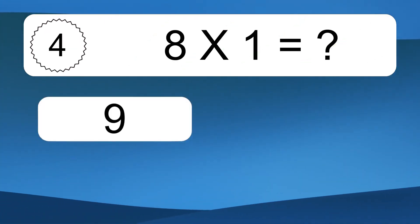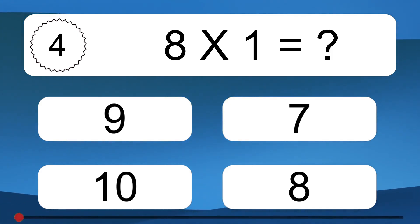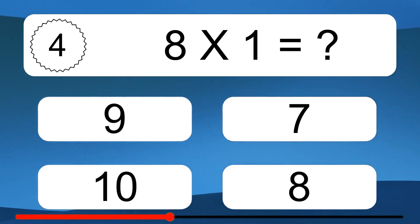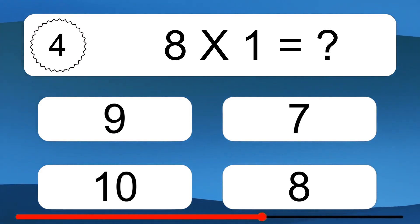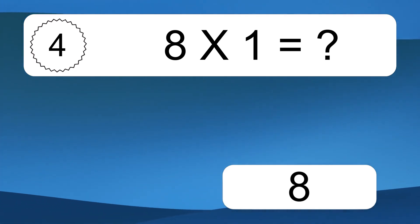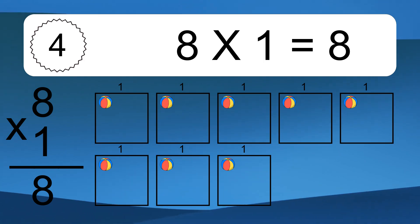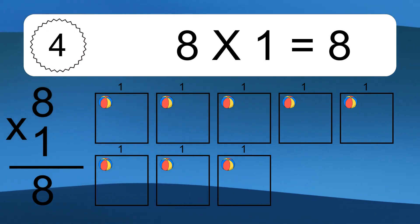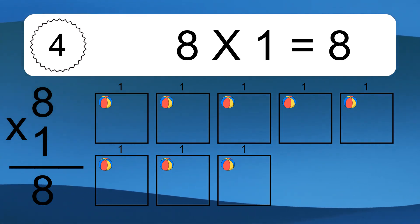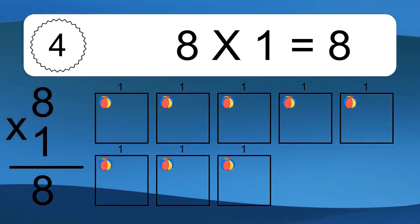8 times 1 equals what? We have 8 boxes, and each box has 1 colorful ball inside. If you count all the balls in all the boxes together, you will have 8 times 1 balls. This equals 8 balls.